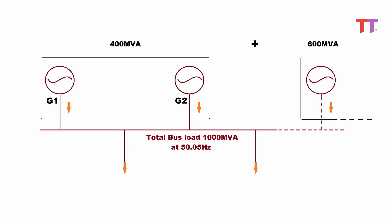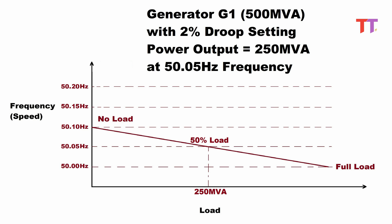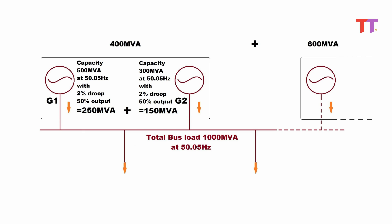Generator G1 and Generator G2. Generator G1, with a max load capacity of 500 MVA, is loaded at 50% using a 2% droop setting. Reference speed is set at 50.10 Hz. Hence G1 is 50% loaded, delivering 250 MVA load at 50.05 Hz speed, which is bus frequency. Similarly, by setting reference speed at 50.10 Hz, Generator G2 with 300 MVA capacity is loaded at 50%, delivering 150 MVA load at 50.05 Hz speed. This is how G1 and G2 deliver 400 MVA power to the bus.